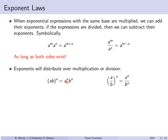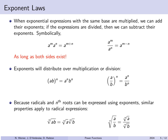Because radicals and nth roots can be expressed using exponents, you get similar distribution behavior for radicals. The nth root of ab is (ab)^(1/n) = a^(1/n) · b^(1/n), and the nth root of a/b is a^(1/n) / b^(1/n). These are equal provided all terms exist.